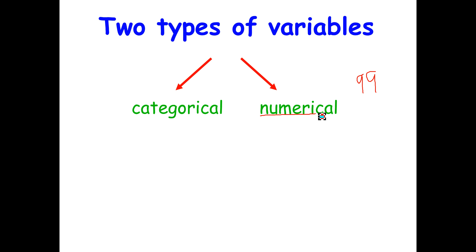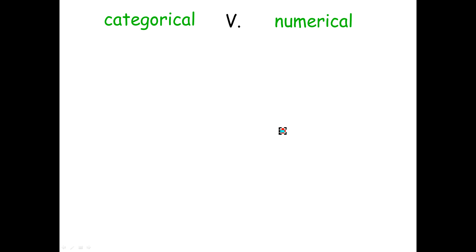And within the numerical category, you have two other distinctions that you need to know about. You have discrete and you have continuous, and I'll talk about what those are later. First, I want to talk about how to tell the difference between categorical and numerical data.